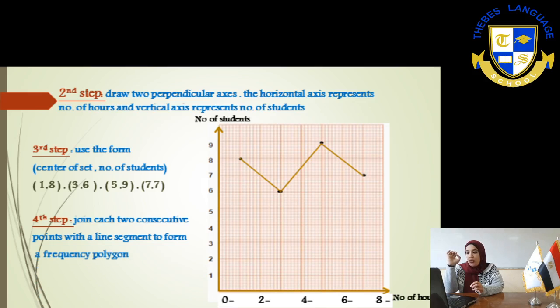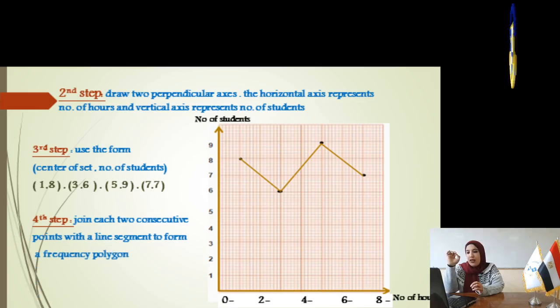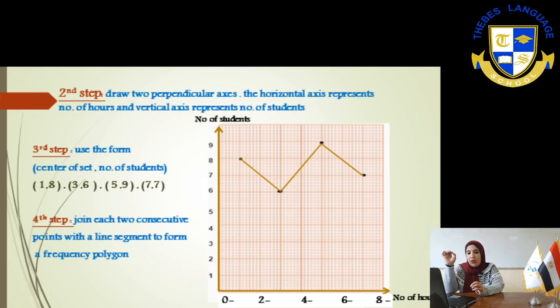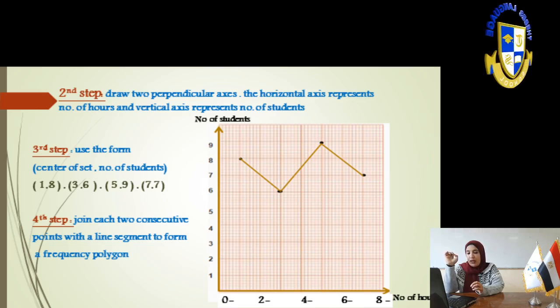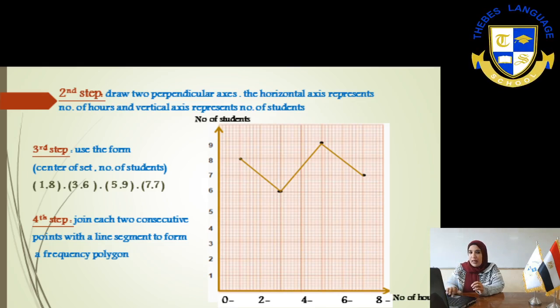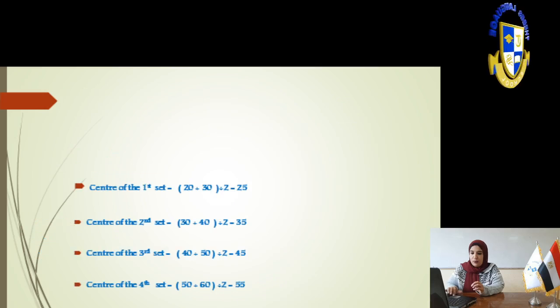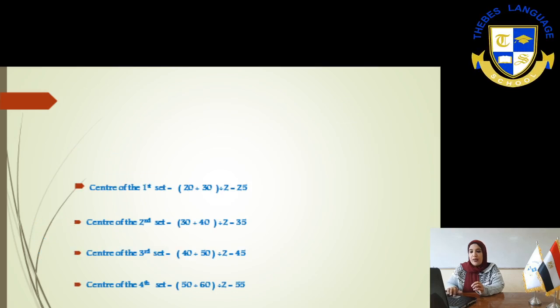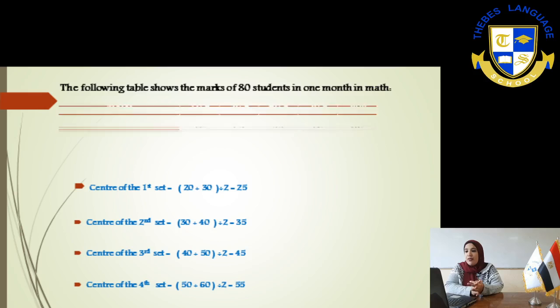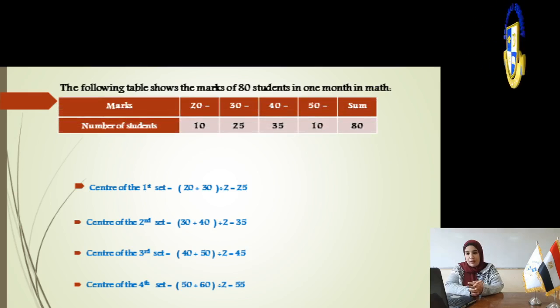From the first point, which is number 1 and 8, then the second one, third, then fourth. Do it using your pencil and ruler. After you do it, this figure represents the frequency polygon of this question.